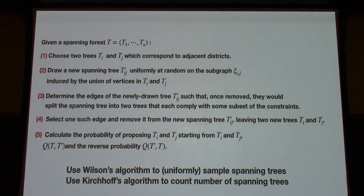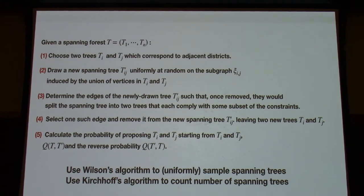You pick another node and walk until you hit the path and freeze it again, erasing the movement. When you're done, you'll have a spanning tree. It turns out — magically, it's math — but it's uniform on all spanning trees. So you can calculate that, and it's actually relatively quick in these problems.